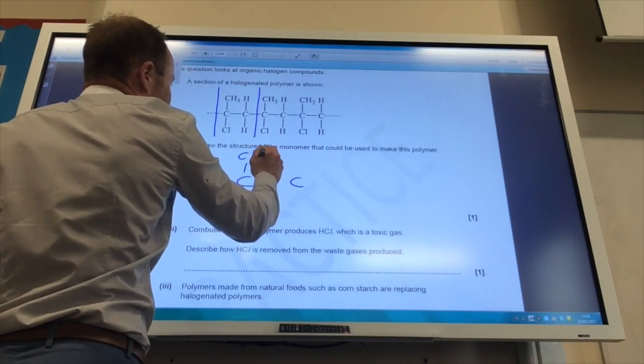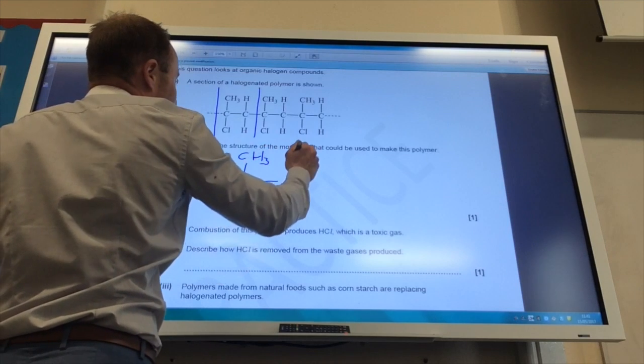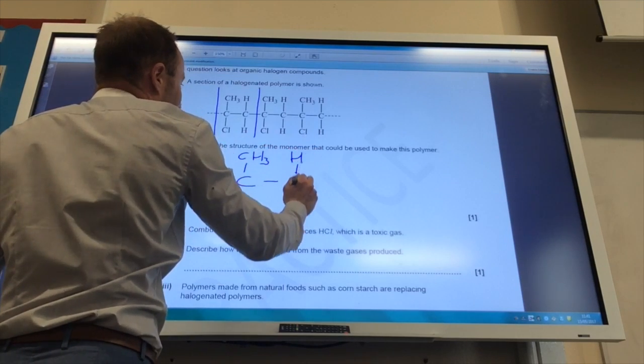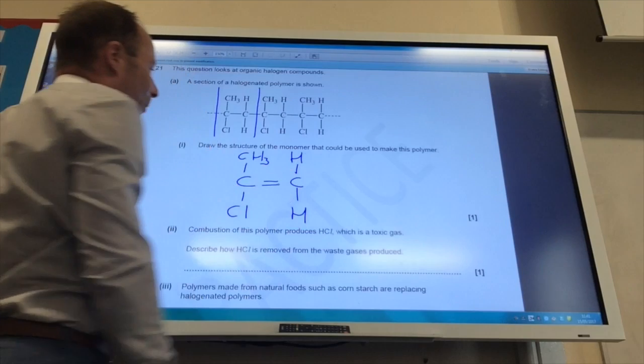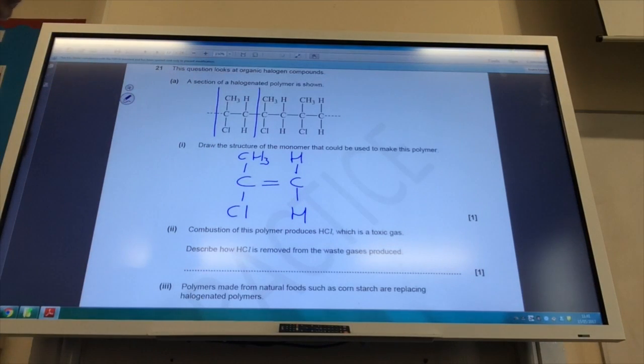Just draw it out exactly like they've shown you on the question, but put a double bond in the middle there.